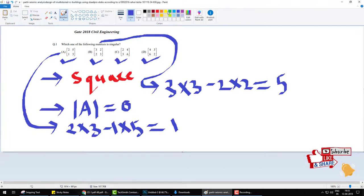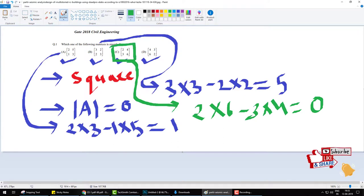And if we remove the determinant of the third matrix C, then 2 × 6 is 12 minus 3 × 4 is 12, equals 0. And if we check the fourth matrix, 4 × 2 minus 6 × 3. The determinant of C matrix is 0. That is our singular matrix.